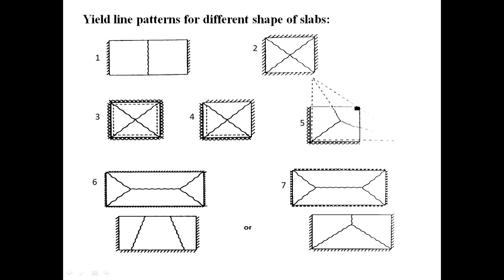Fifth case: two edges are fixed and two are free, supported on a column — the yield line transfers to the free edge, and the pattern reflects the free-end and fixed-end condition. Sixth: two-way simply supported slab, as discussed previously. Seventh: fixed two-way slab — negative yield lines should be present at the periphery (note: possibly omitted in figure by mistake) and positive yield lines develop at the center according to the slab shape.